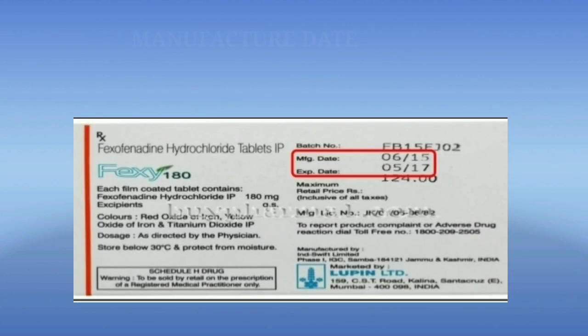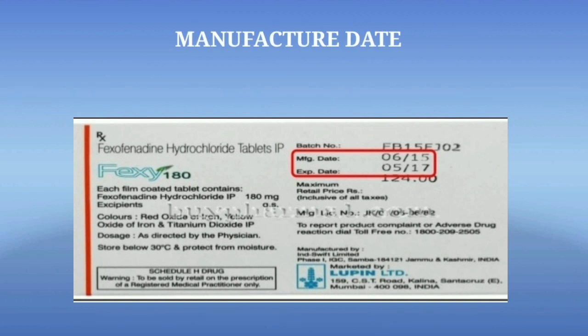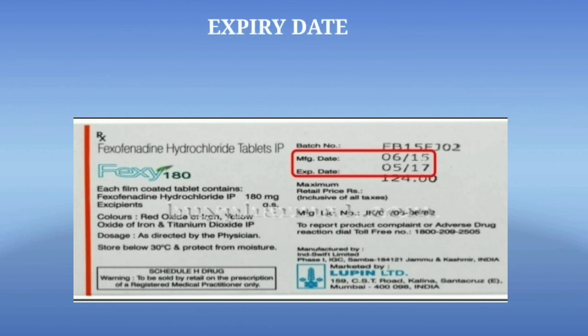The next one is manufacturing date — it is printed on the label and represents the date that the product was produced. The next one is expiry date — the date stated on the label of a drug after which the drug is not expected to retain its efficacy, safety, quantity, or potency, or after which it is not permissible to sell the drug.